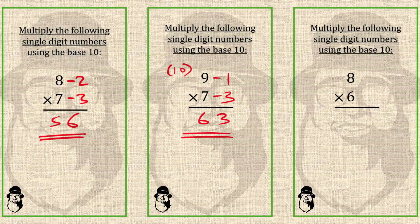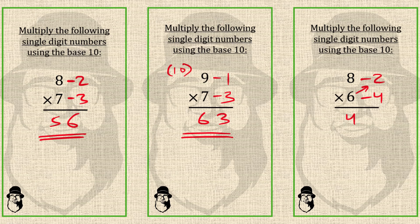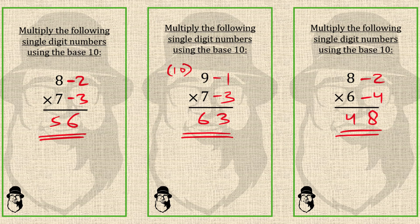Here 8 is 2 far from 10, so we write minus 2. And 6 is 4 far from 10. Then we cross subtract: 8 minus 4 is 4, or we can do 6 minus 2, that is also 4 — that is the left part of the answer. For the right part, we multiply these two complements: 2 times 4 is 8. So our answer is 48 for 8 times 6.